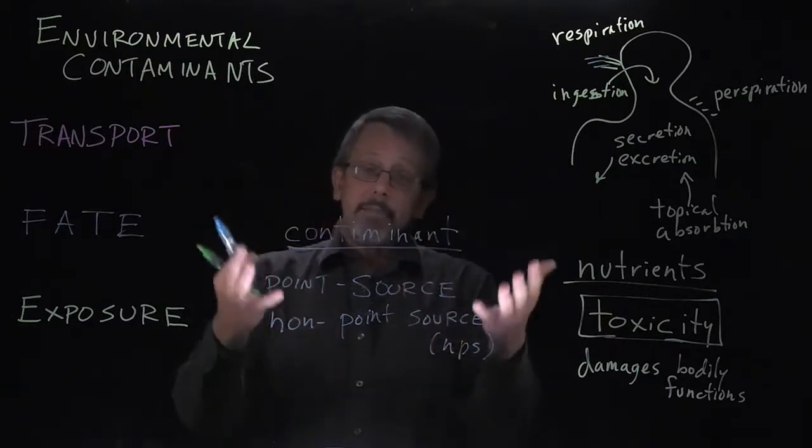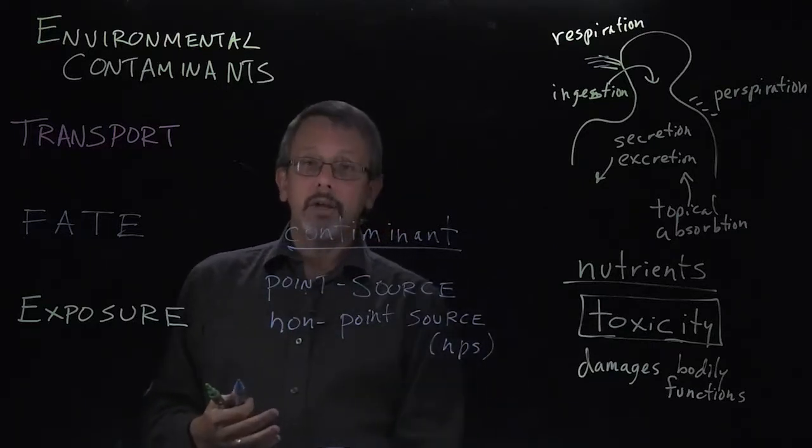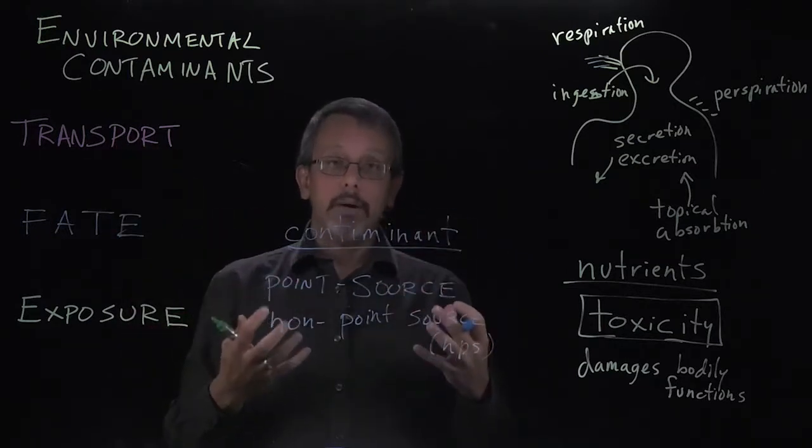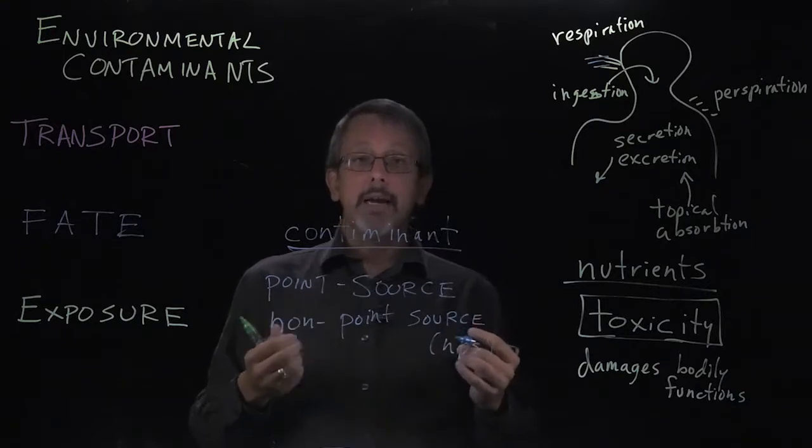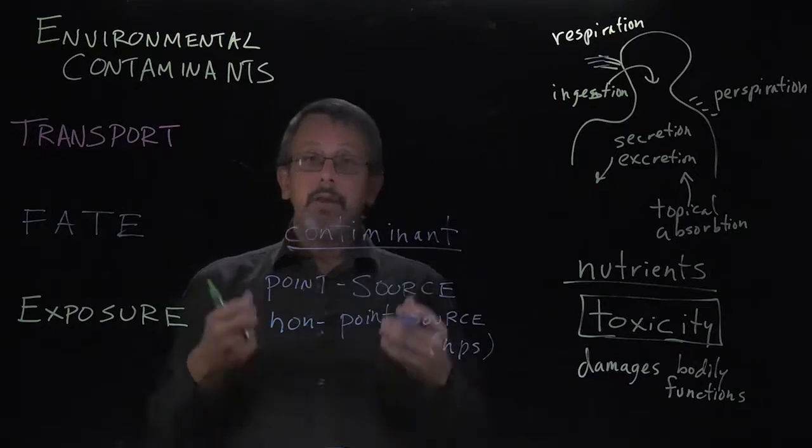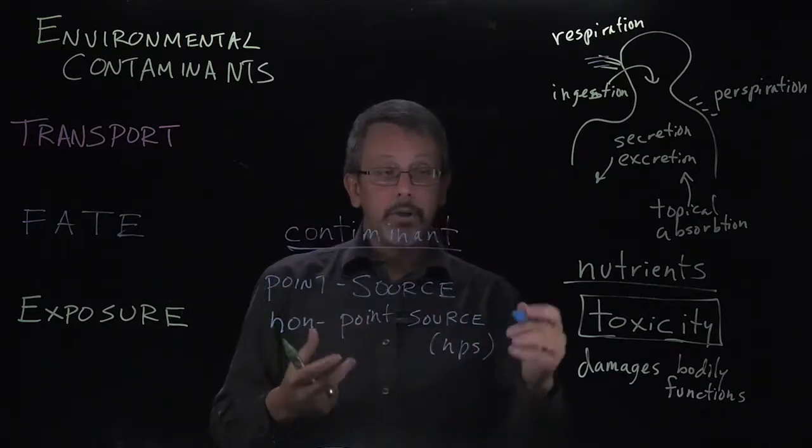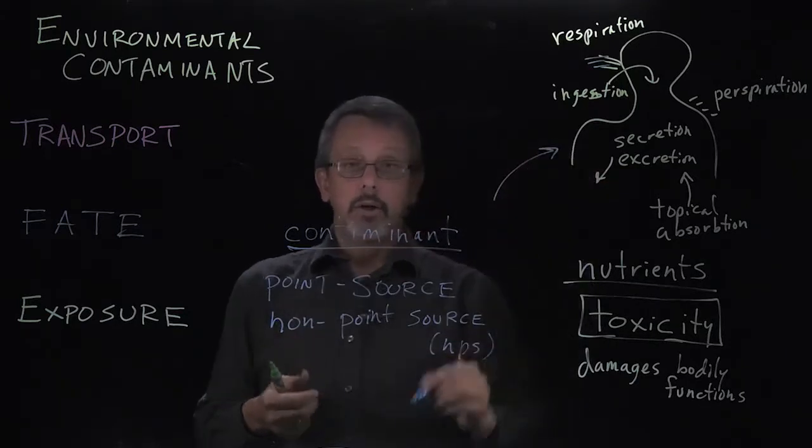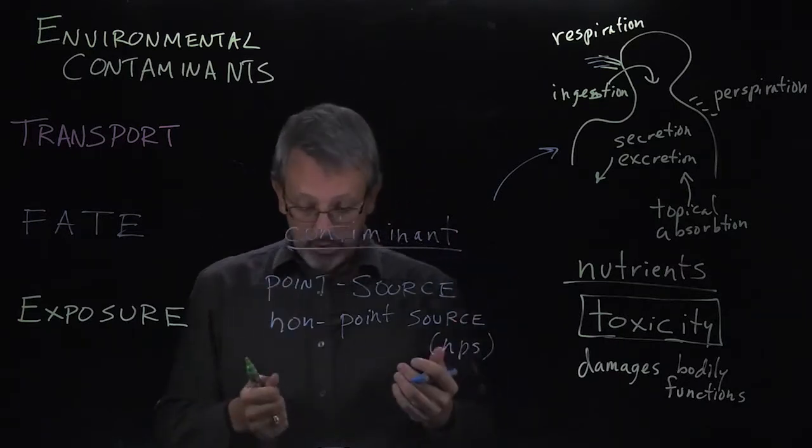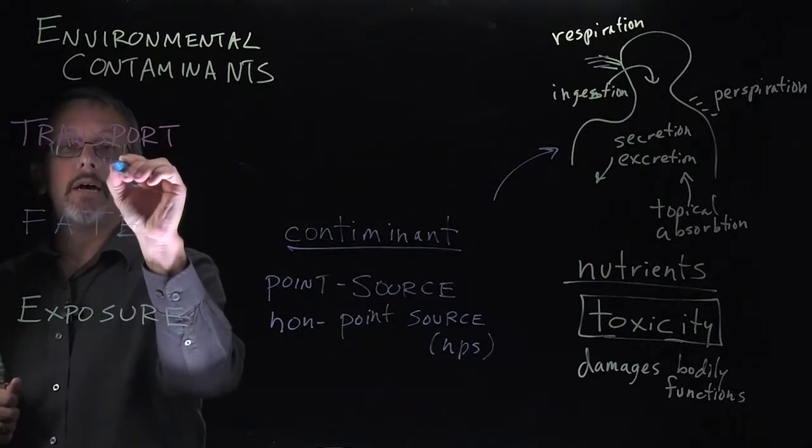So, once we have contaminants in the environment, and they've originated, they've gotten into the environment, there are three methods, or three pieces that we care about to study. And these methods line up with our standard sciences. The first method is transport. The contaminants are going to move from their source and eventually end up in contact with a living being. In our case, most frequently we care about humans. So transport is the movement of the contaminant.